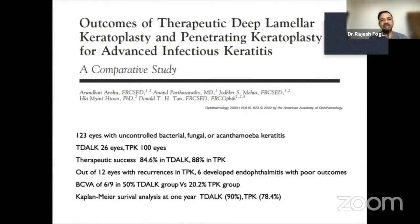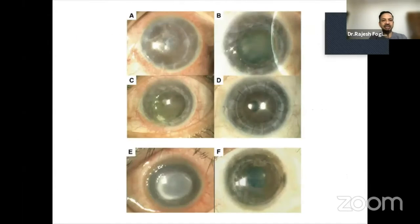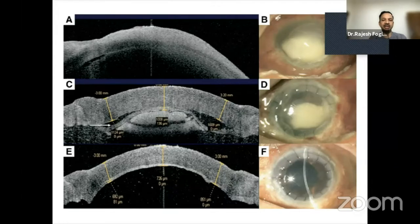A study from Singapore National Eye Center by Donald Tan compared therapeutic penetrating keratoplasty to therapeutic DALK. Both achieved similar therapeutic success. However, with full thickness therapeutic keratoplasty, when they had recurrence, almost 50% had poor visual outcome. Best corrected visual acuity and long-term survival, the therapeutic DALK outperformed therapeutic keratoplasty. One case showed exudate present within the interface, which was sterile, and with continued medical therapy the graft finally cleared, leading to good outcomes. So don't go by the early post-op — you have to differentiate between sterile hypopyon and a recurrence of the infection.